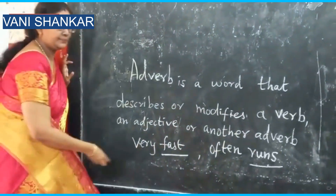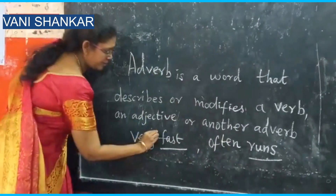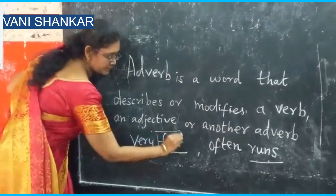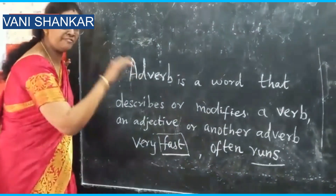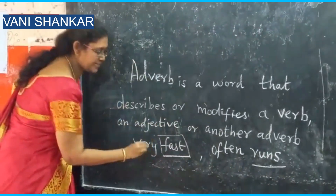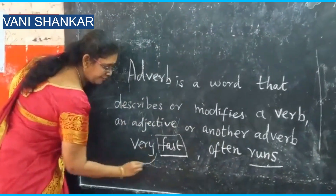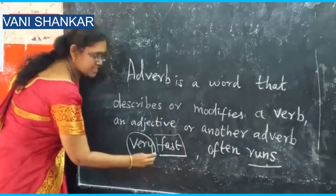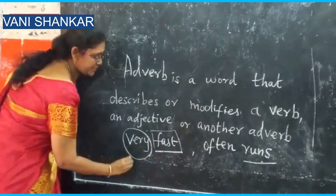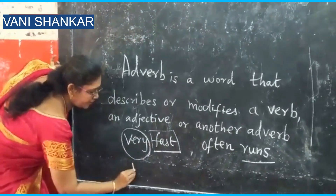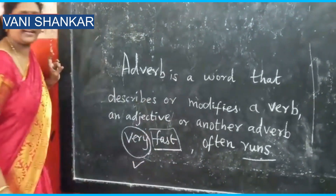For example, I have 'fast.' How fast is that person? Very fast. So 'very' here is modifying the adverb 'fast' — very fast.